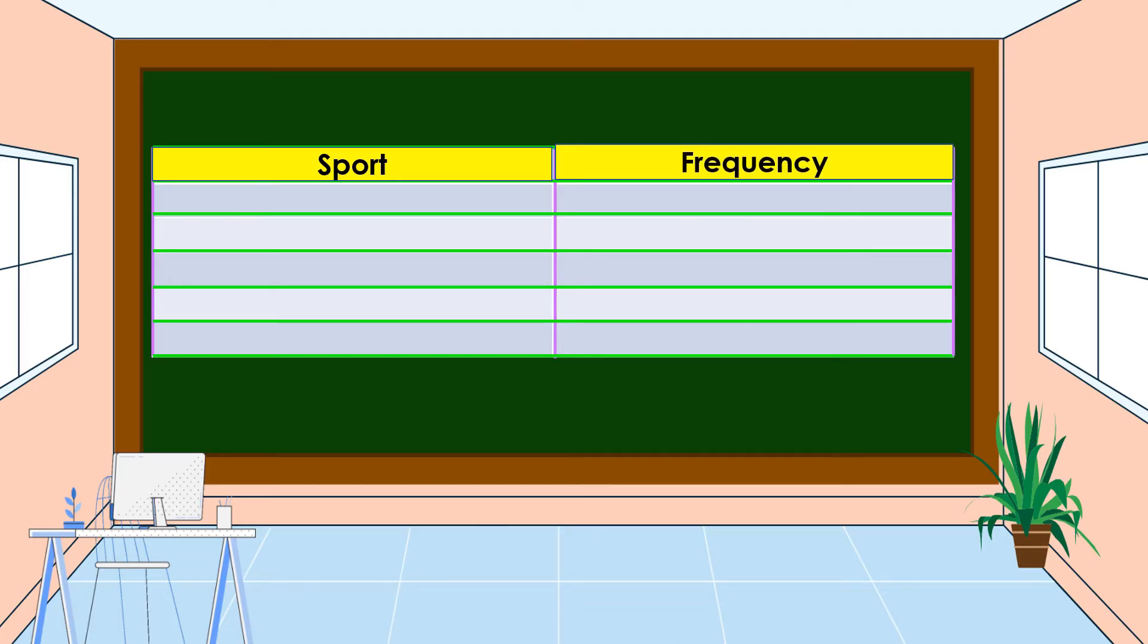The frequency is from the result of the tally. So we have for volleyball, the frequency is 14; for basketball, it is 12; for chess, it is 8; for swimming, the frequency is 9; and for badminton, it is 7.